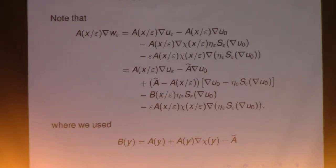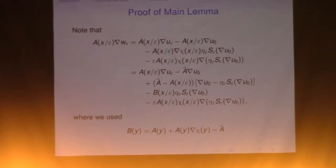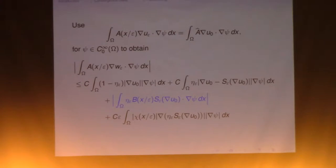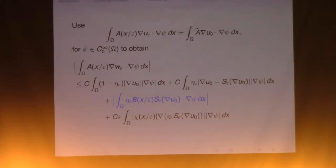Now let's simply multiply the gradient of a test function to both sides and integrate on omega. We use the fact that both U_ε and U0 are solutions of the Dirichlet problem. So these two integrals are the same — the forcing term F is the same for both Dirichlet problems. So this equals zero, and you end up with these three terms.